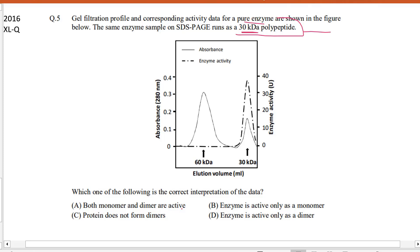Which is false because we can see here in the dimer form there is no enzymatic activity, so this option is wrong. Enzyme is active only as a monomer, it is true. Okay, we can see in the 30 kilodalton, enzyme activity is here.